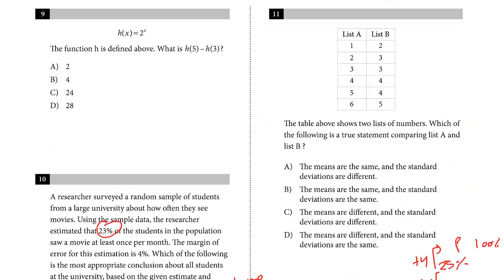Let's take a look at question 11. The table above shows two lists of numbers. Which of the following is the true statement comparing list A and list B? If you look at the choices, this has to deal with mean and standard deviation. So let's just figure out the mean first to see if the means are the same. We just add them up and divide by the number of observations. So one, two, three, they each have six.